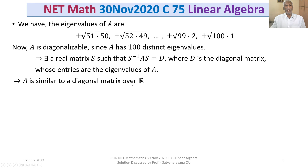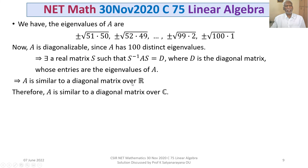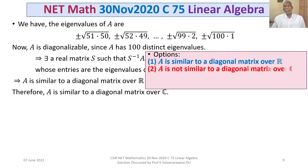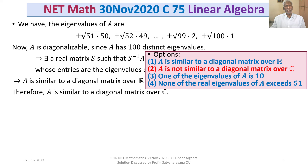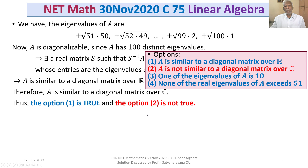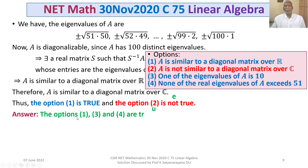Whenever A is similar to a diagonal matrix over ℝ, it is also similar to a diagonal matrix over ℂ. Therefore option 2 — that A is not similar to a diagonal matrix — is false. The final answer is that options 1, 3, and 4 are true.